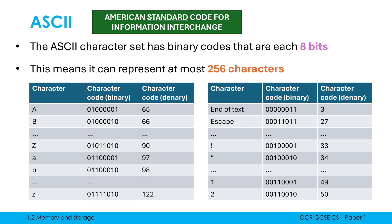The ASCII codes are what we call sequential. The code for capital A is 65, capital B is 66, and capital C would therefore be 67. Commonly in exams they'll give you one code like A and ask you to work out the code for D based on this. You just use the properties of the alphabet and the fact that codes are sequential — in order — to work out what future codes will be.